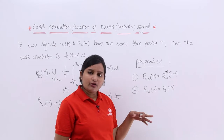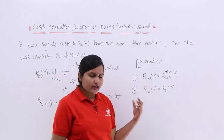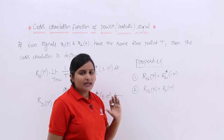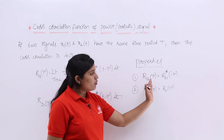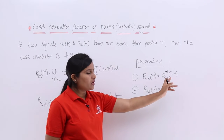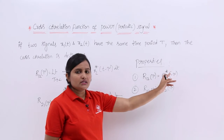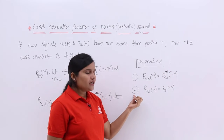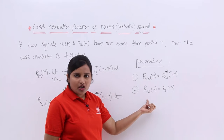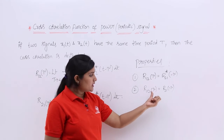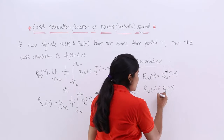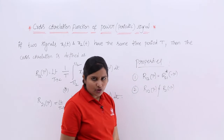This conjugate symmetry property applies to cross correlation of energy signals as well. So the first property is that it obeys conjugate symmetry: R12(τ) = R21*(−τ). Unlike convolution, cross correlation is not commutative — R12(τ) is not equal to R21(−τ).